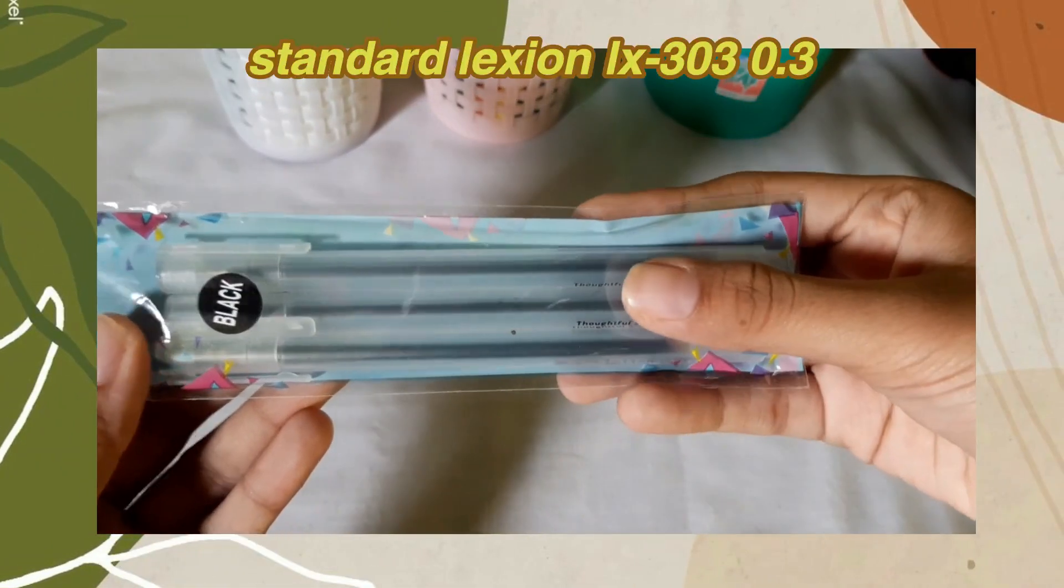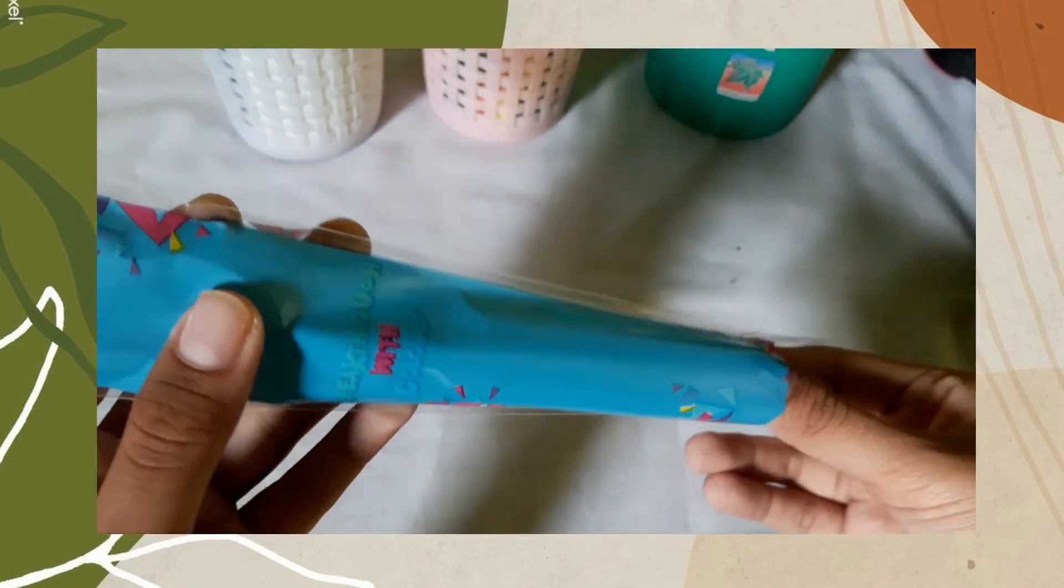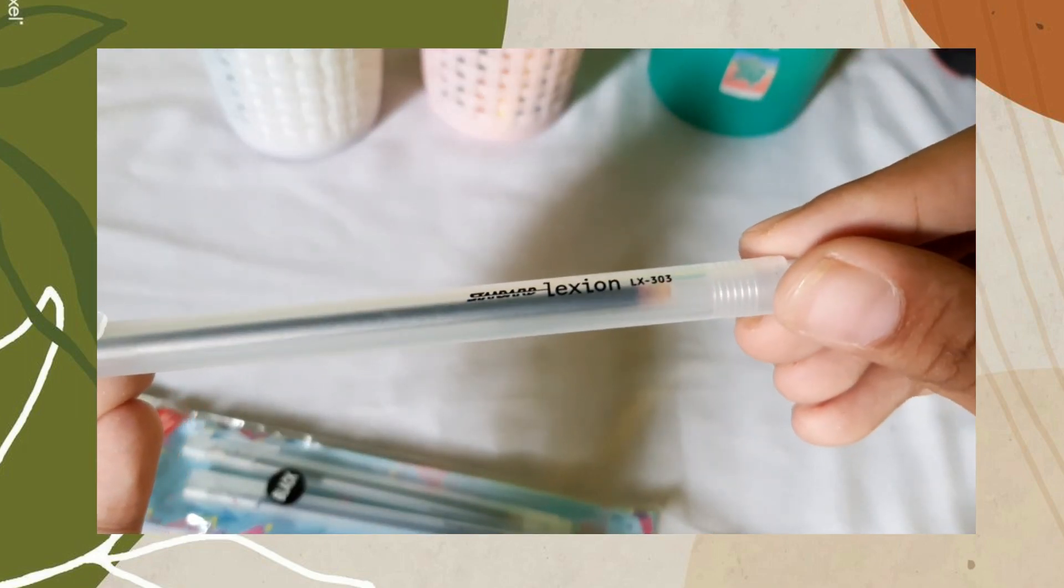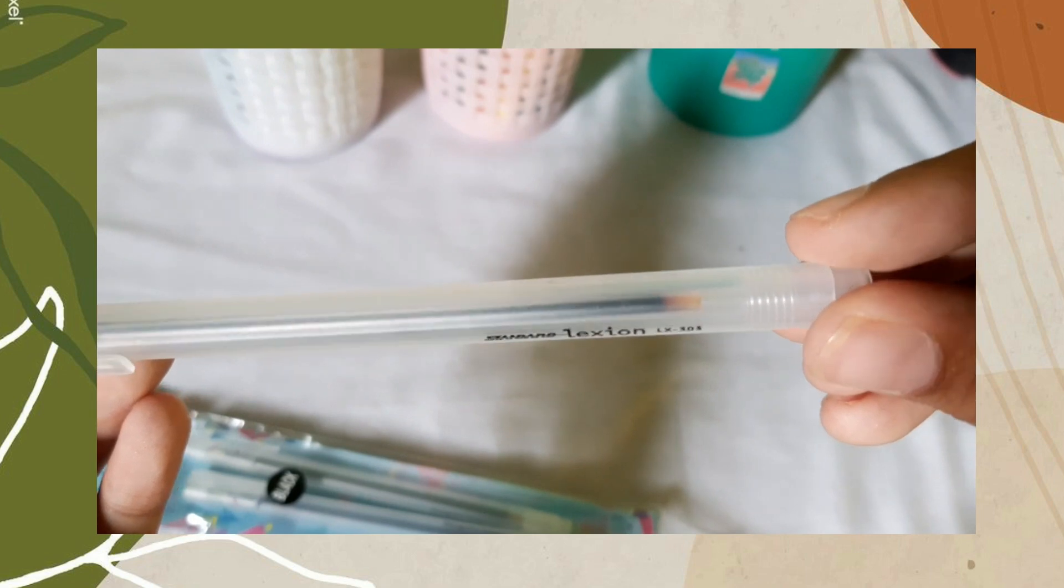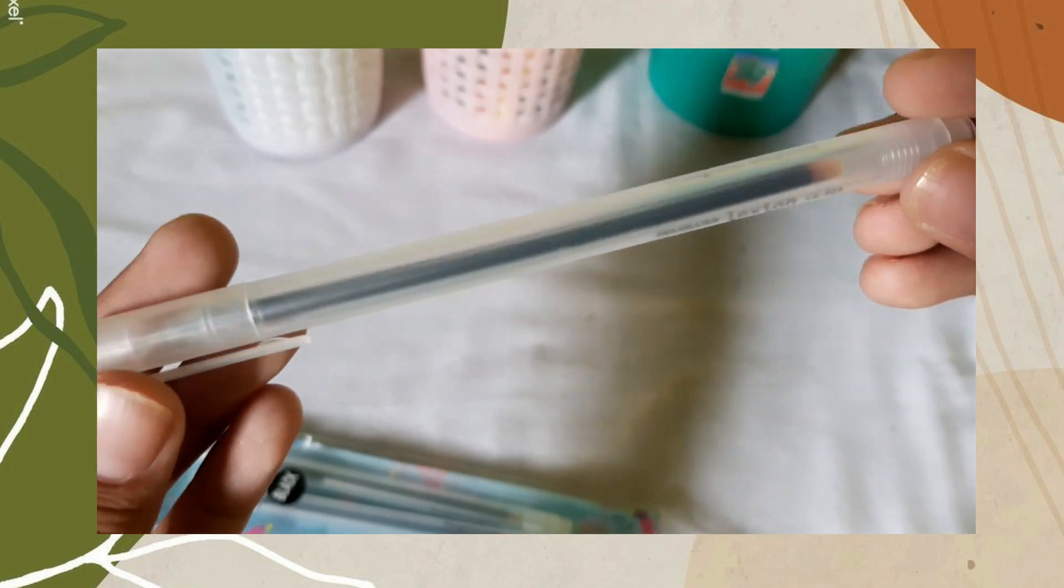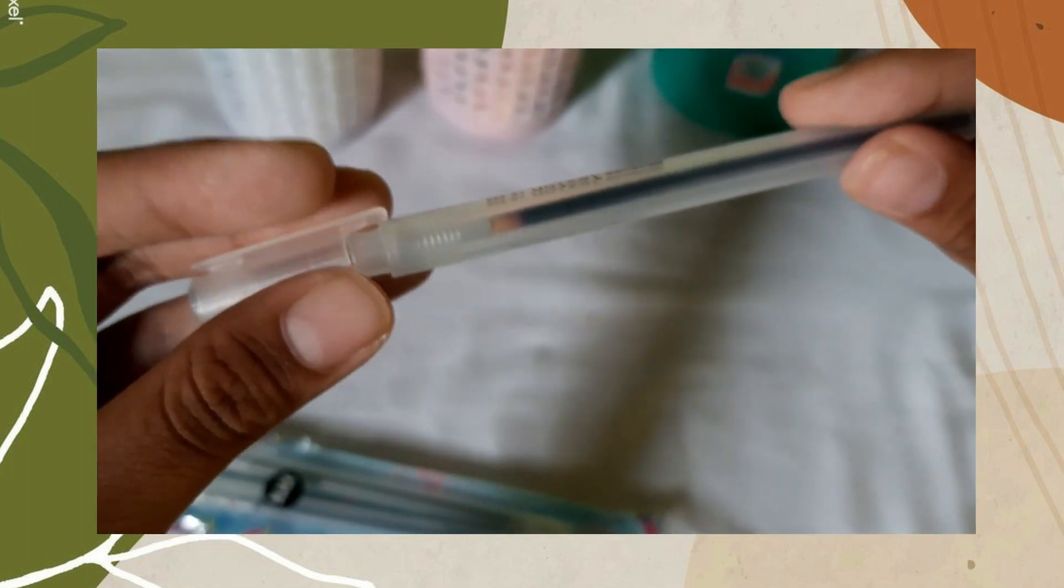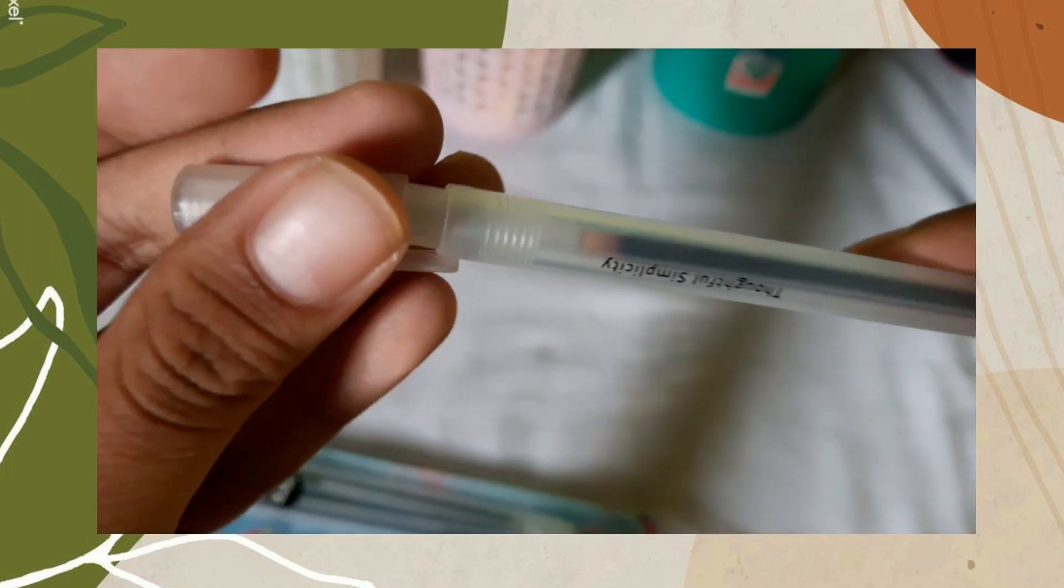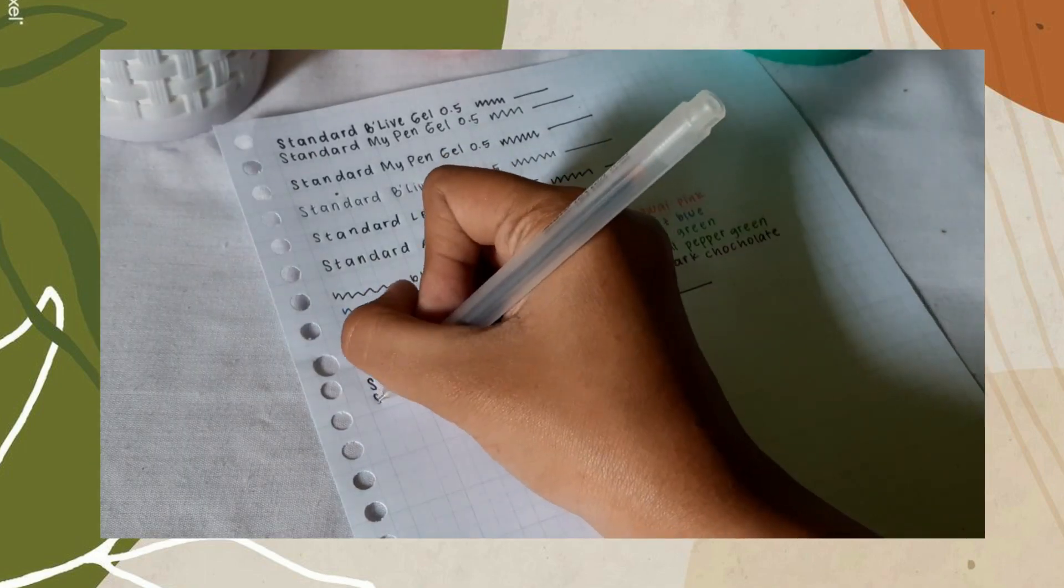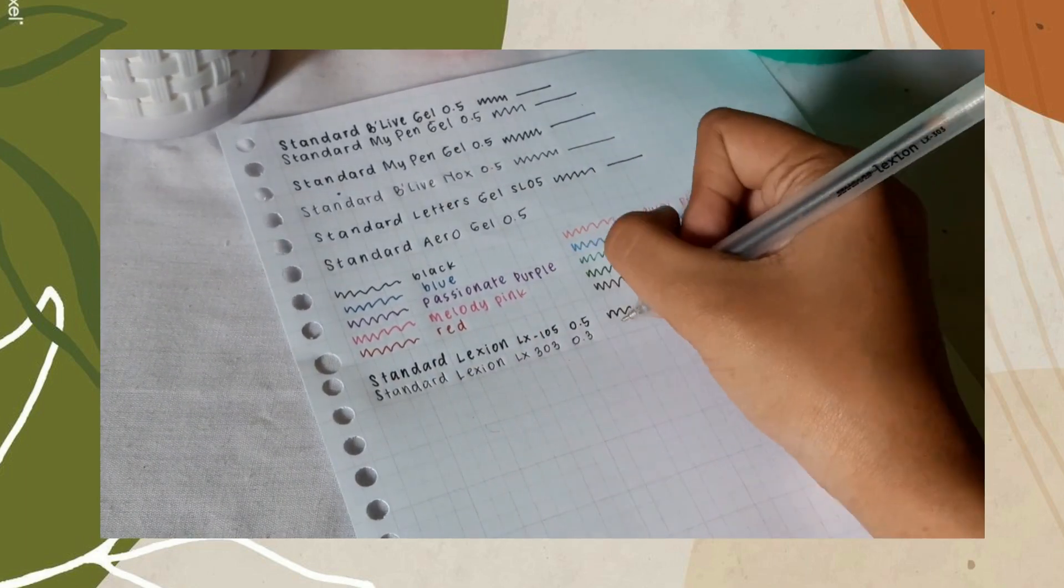Masih dengan seri Lexion, tapi kali ini nama produknya Standard Lexion LX303 0.3. Packagingnya juga sama. Terus desain pulpennya tuh simple banget. Aku suka, transparent tapi samar-samar gitu. Sesuai dengan namanya, pulpen ini tuh punya ukuran 0.3mm dan dia juga punya spot buat nolong tutup pulpen. Pas di swatch, ini enak banget sih. Karena ini ukuran 0.3mm, jadi hasil tulisannya tuh lebih tipis gitu.